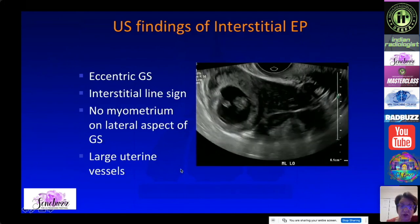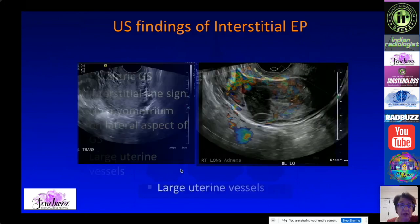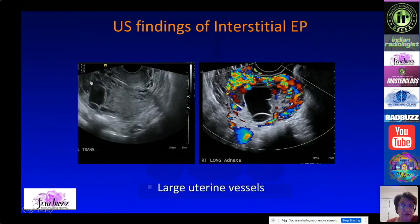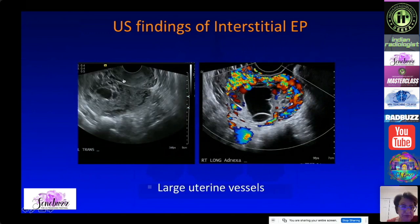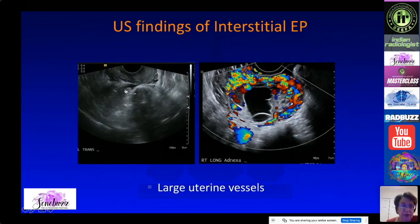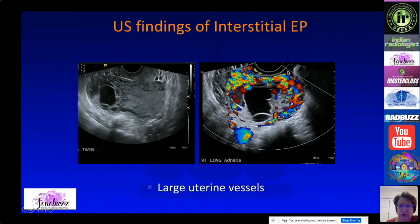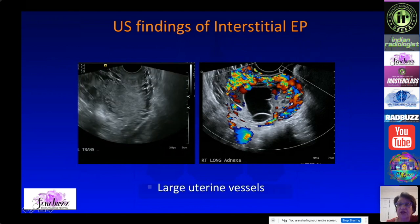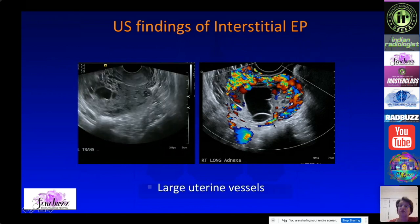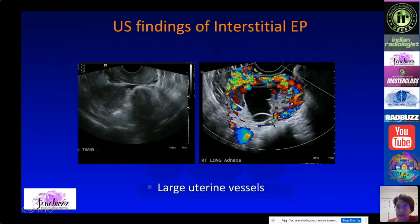In another patient you can see the ectopic pregnancy with very large vessels nearby. You can imagine that if they rupture, the patient is going to become hypotensive very quickly.